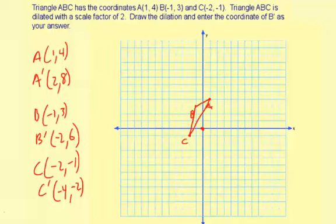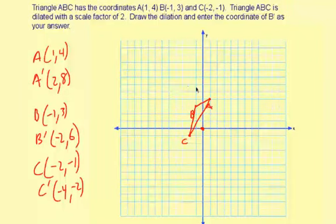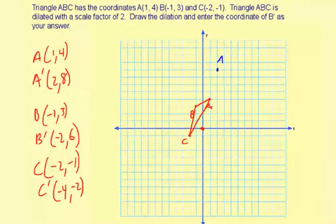Now, let me change colors here to finish drawing this dilation. So A' is going to be at the point 2, and then up 8, 2, 4, 6, 8. So right there, it's A'.